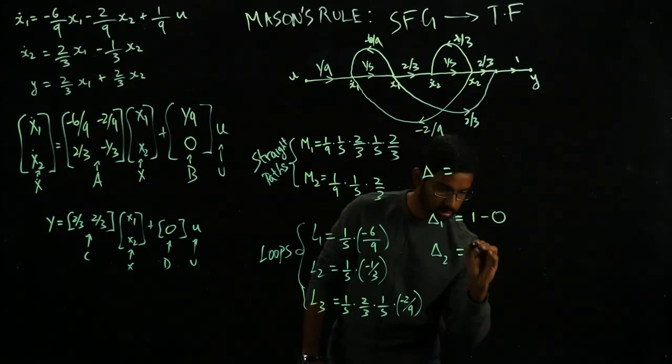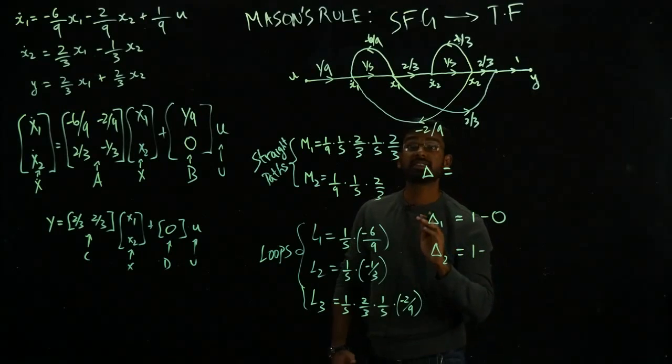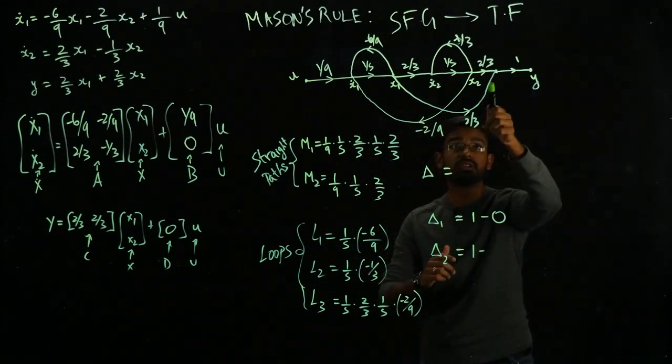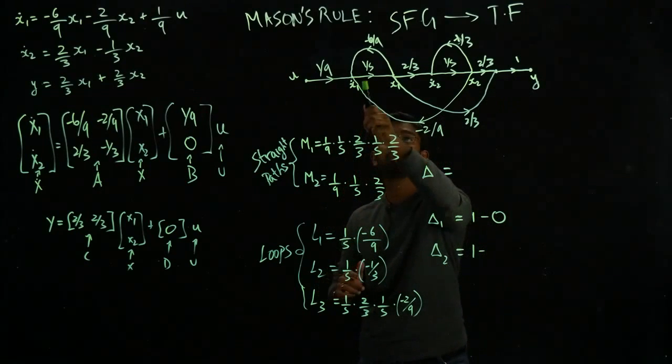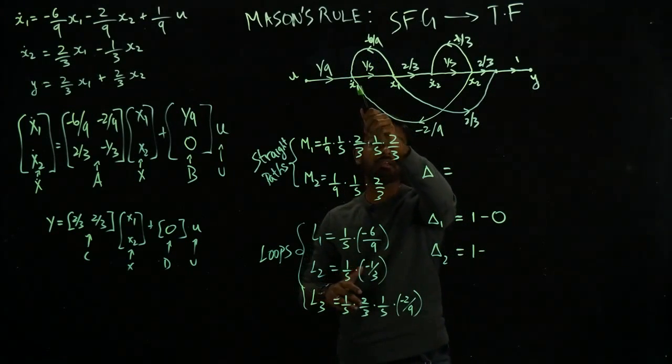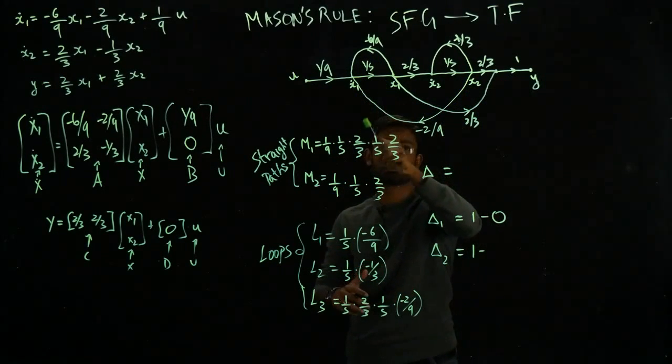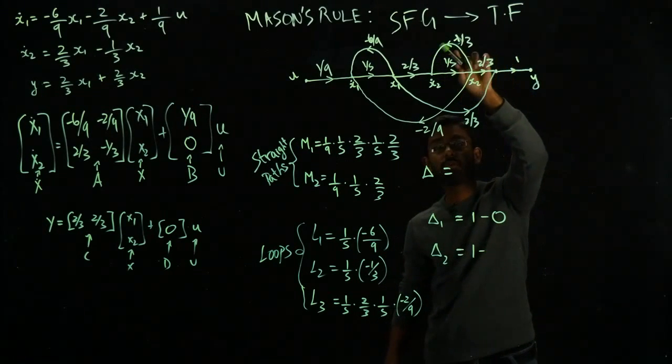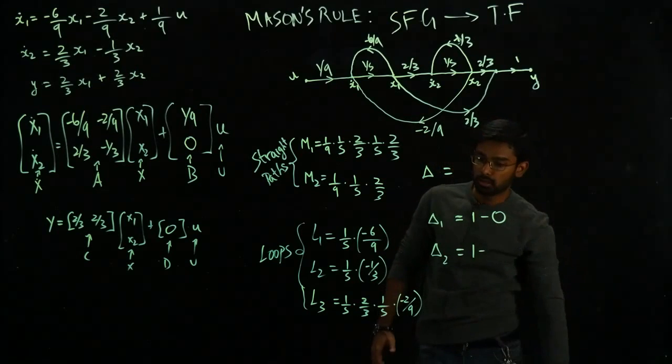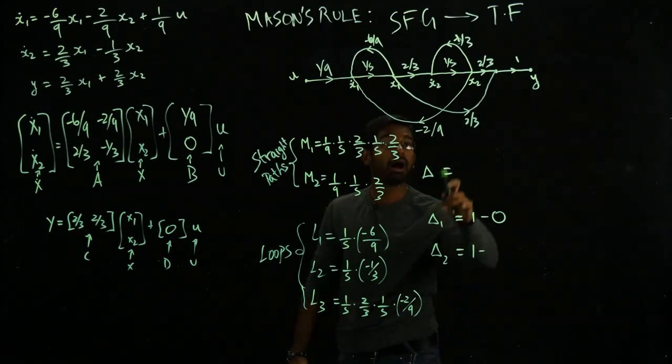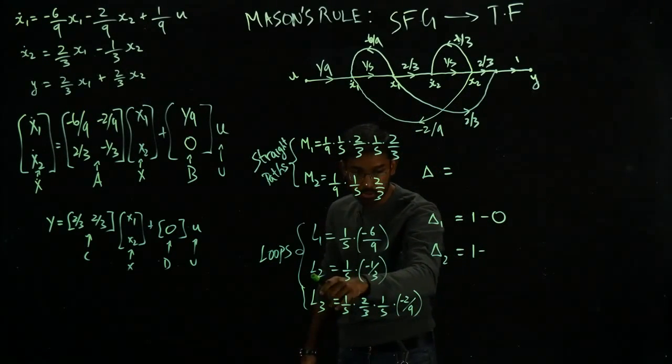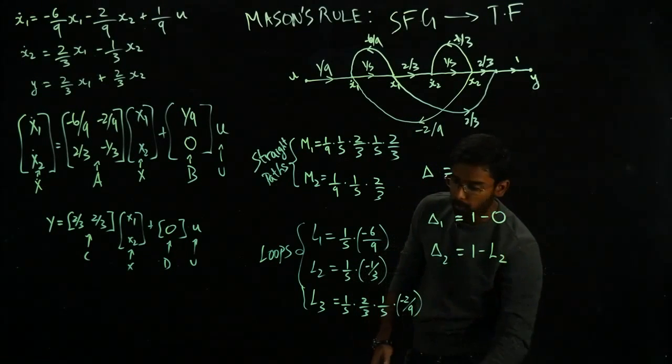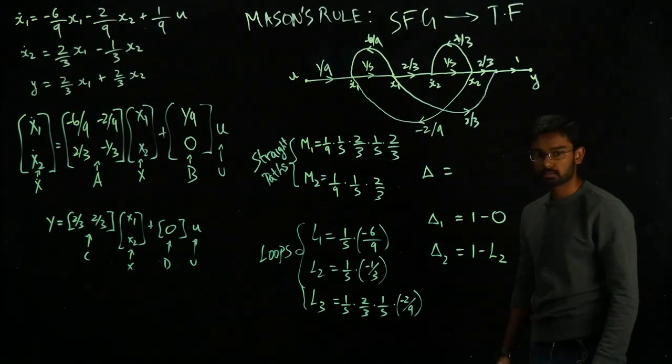So you can just plug in a 0 there. Delta 2, 1 minus, let's see if there are any loops that are not touching it. Let's remind ourselves, this is M2. This is the second forward path right here. So this loop is touching it. This loop is also touching it. But what about this guy? This loop right here is not touching this one, which means this I described as L2. So L2 is not being touched. So 1 minus L2. Is that clear?